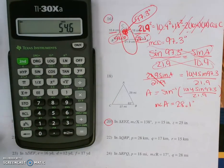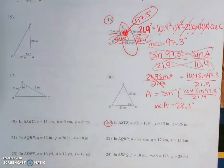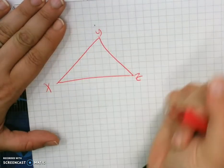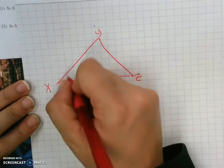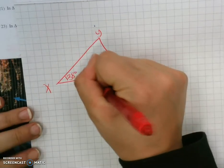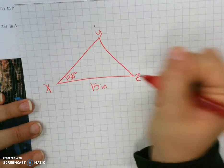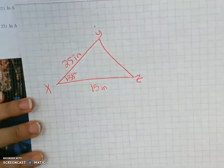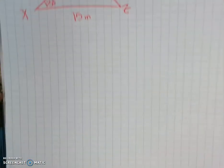And then the last problem that you guys asked me to complete is number 20. So number 20, it just gives us the information. I'm going to draw it. X, Y, Z does not need to be drawn to scale. Angle X is 138 degrees. Side Y is 15 inches. And side Z, across from angle Z, is 25 inches. And they want us to solve the triangle, which means find all of the missing components.